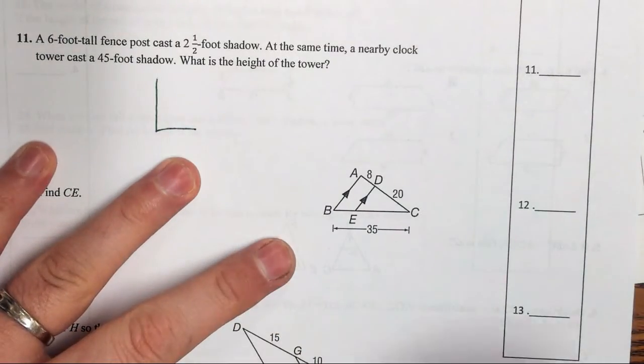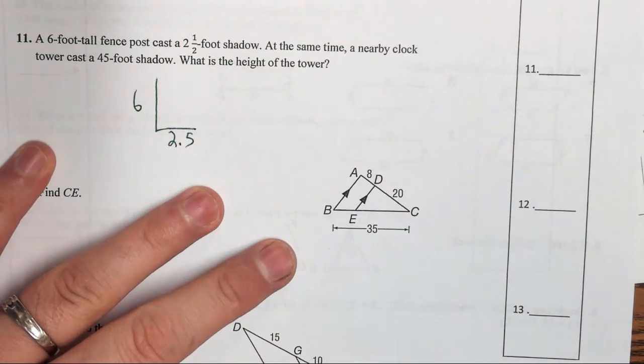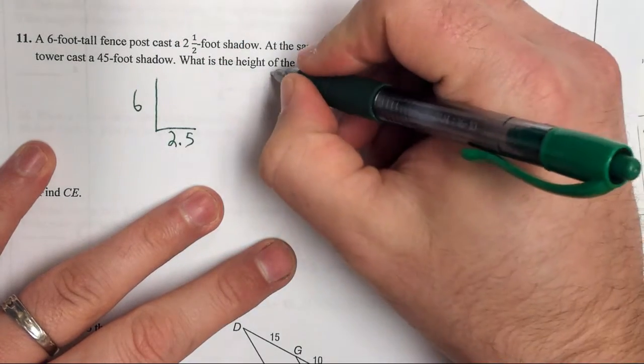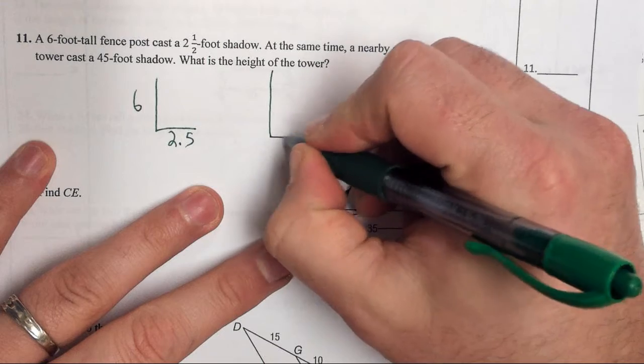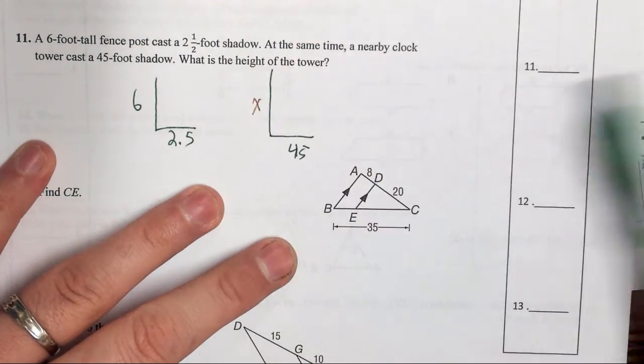So I'm going to make my very detailed picture here. There's six feet and there's 2.5 feet. At the same time, a nearby clock tower casts a 45-foot shadow. Find the height of the tower. We're going to put an X there.